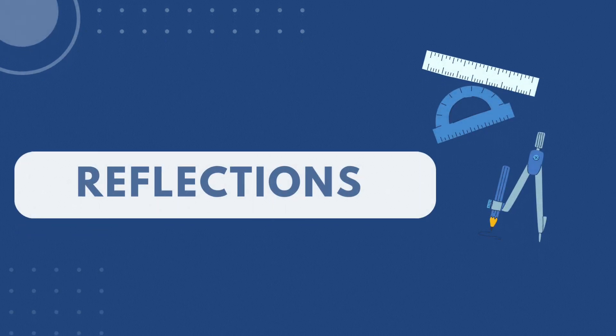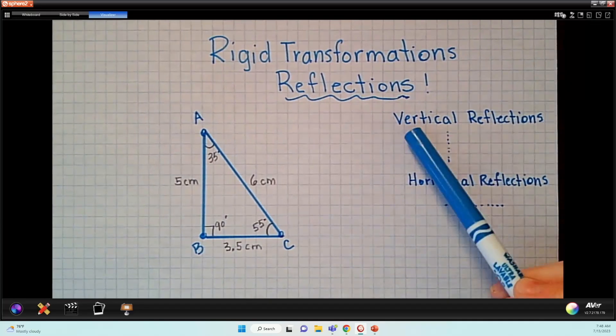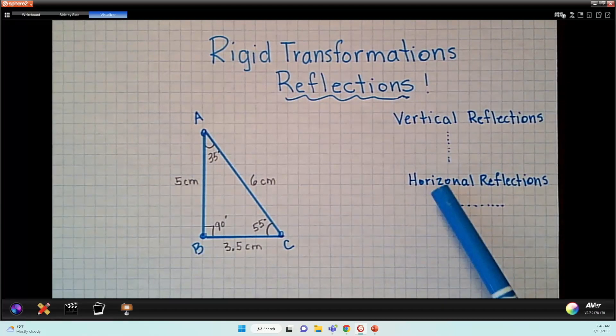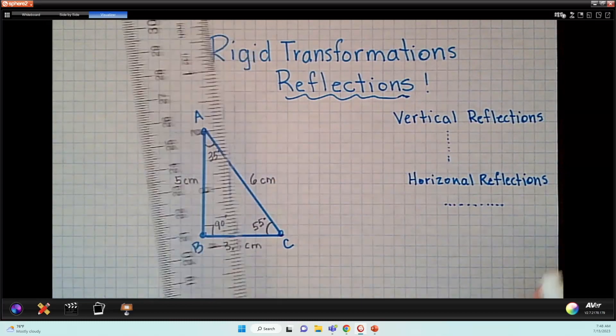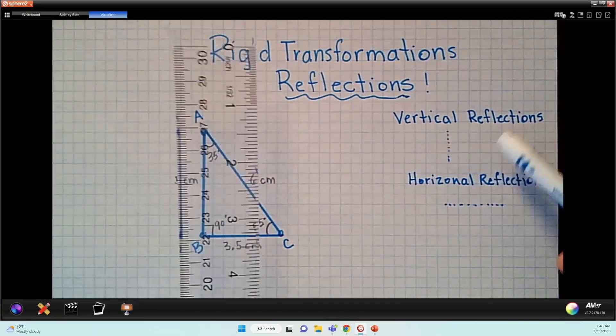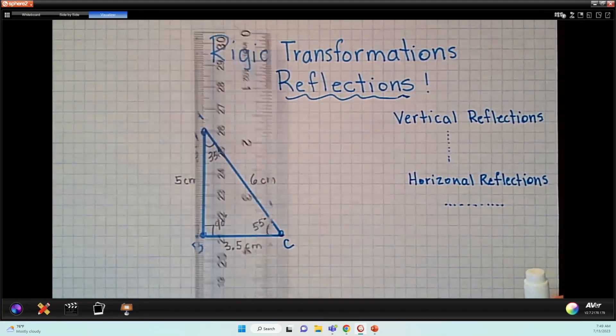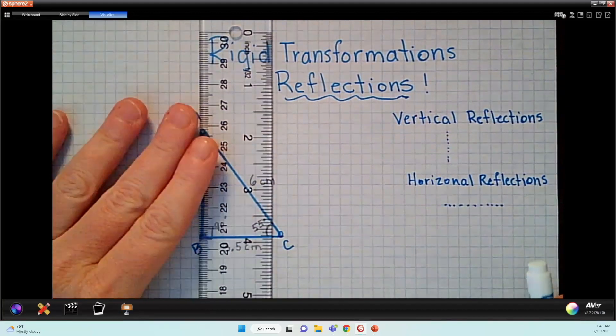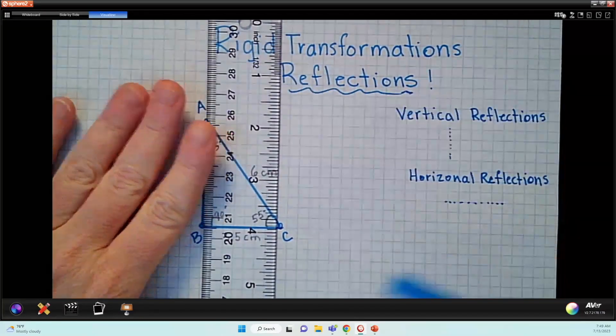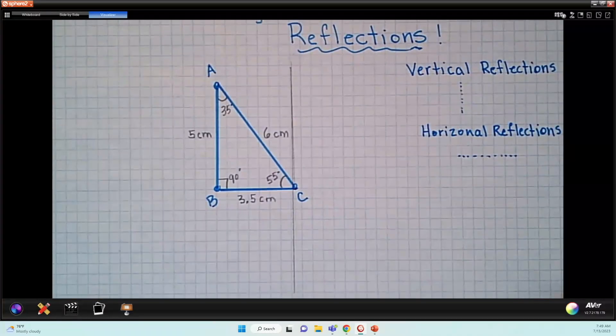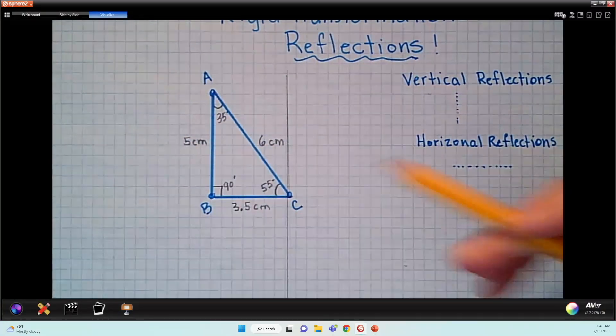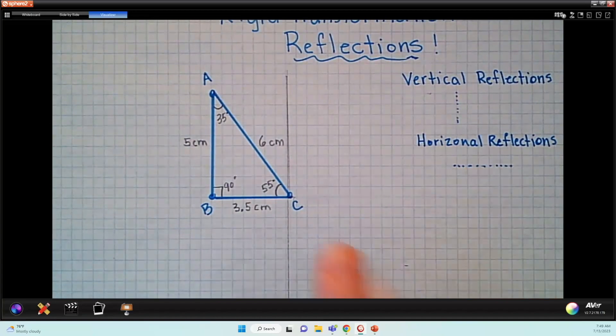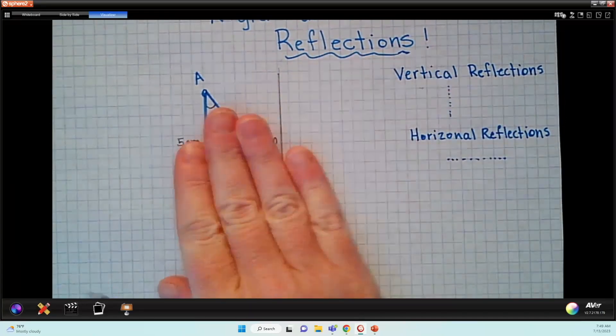Up next, we have rigid transformations, reflections. So we have vertical reflections, we have horizontal reflections. So I'm going to show you two different types of reflections that we can do. So my first one, I'm going to say, we're going to do a vertical reflection. And we're going to use point C as our vertical line. So I am going to make a vertical reflection over this line. And I'm using point C as my point where I'm going to reflect it over.